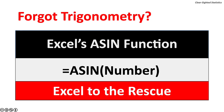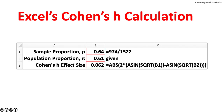Excel's ASIN function helps those who forgot trigonometry. The basic arcsine formula is =ASIN(number). Using Excel, we can combine the arcsine transformation and Cohen's H calculation in one cell. The Statistics Kingdom A-Priori Power Calculator can also quickly calculate Cohen's H using the sample proportion and population proportion. The calculation of Cohen's H in cell B3 combines the arcsine function for both proportions. Cohen's H equals 0.062.